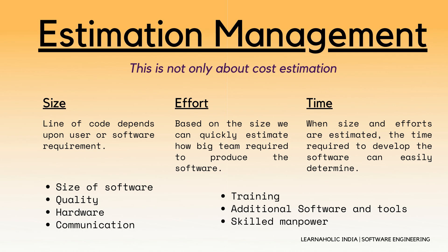If we talk about time, when the size and efforts are estimated, the time required to develop the software can easily be determined. And if we talk about cost, it includes all the elements such as size of the software, quality of the software, hardware used, communication, training, additional software and tools, and skill and manpower.